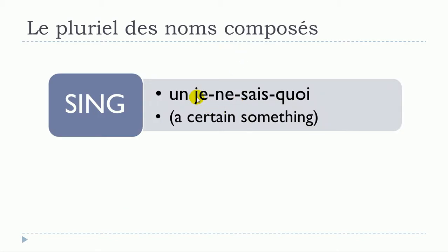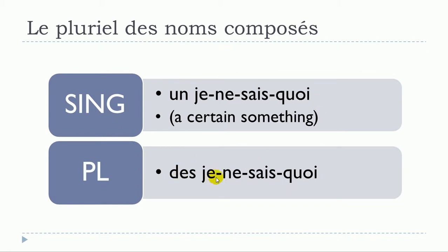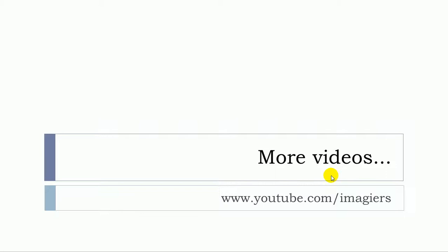And then I just wanted to give you this beautiful one. It's one of my favorites: un je ne sais quoi. Well, it's quite used in English as well. And then if we respect the rule, des je ne sais quoi. So you don't touch at all the word, you just put it like that, no s. And then phonetically of course it's the same pronunciation: un je ne sais quoi, des je ne sais quoi.